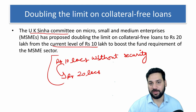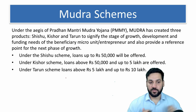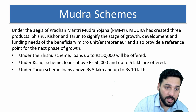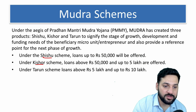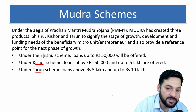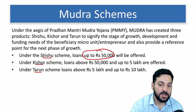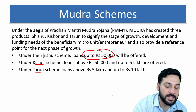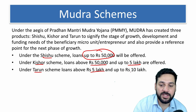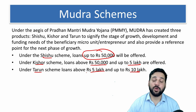Under the Mudra scheme there are three sub-schemes: Shishu, Kishore, and Tarun. Under Shishu, a borrower can get a loan up to rupees 50,000. Under Kishore, a loan from 50,000 to 5 lakhs. Under Tarun, from 5 lakh to 10 lakh. All these loans are collateral-free.